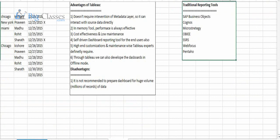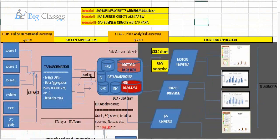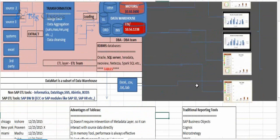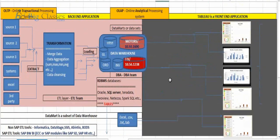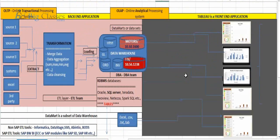But in Tableau, it does not require the intervention of a middle layer or metadata layer. Tableau has the intelligence to avoid the metadata layer with a concept called in-memory. You don't need to store any physical data — your reports will be pointing towards in-memory related data. That is the biggest advantage. So the first advantage is that with Tableau, compared with other traditional tools, we can avoid the intervention of a middle layer or metadata layer.